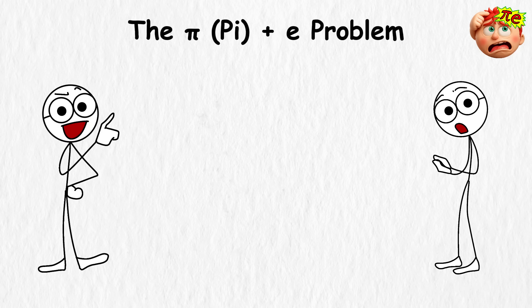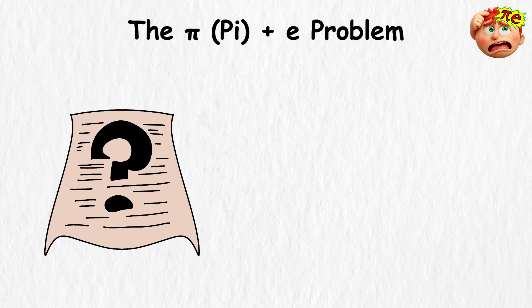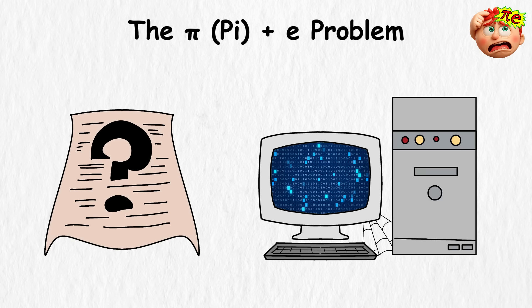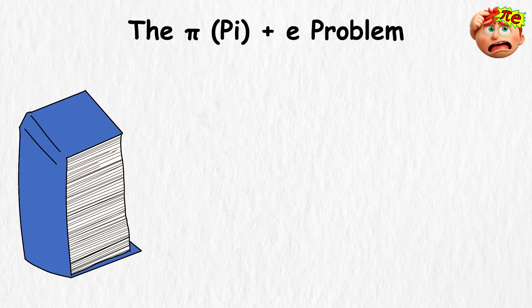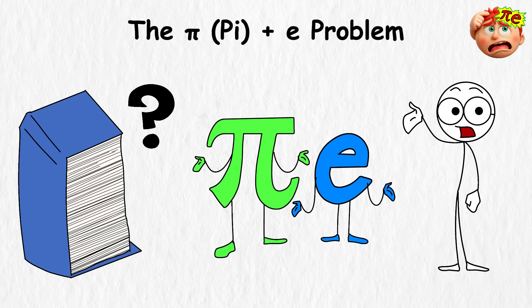On their own, both numbers are well-studied, but once you put them in the same equation, math suddenly goes silent. You can plug them into a computer and calculate Pi plus E to trillions of digits, but that still doesn't give a proof. It's like reading millions of pages of a book without knowing whether the story has an ending. These two constants are so well-known, yet together they're still a mystery.